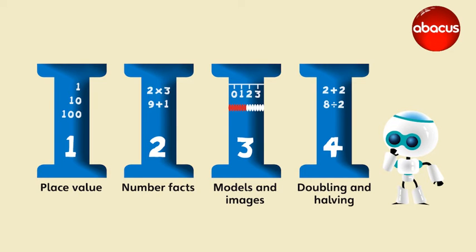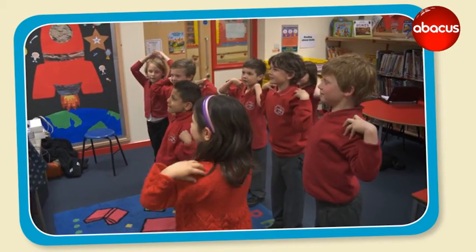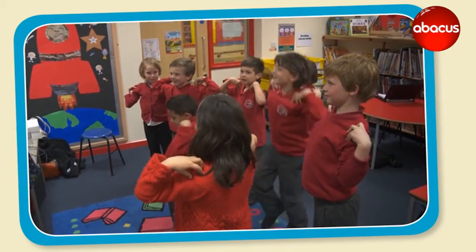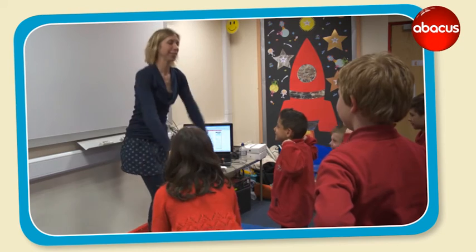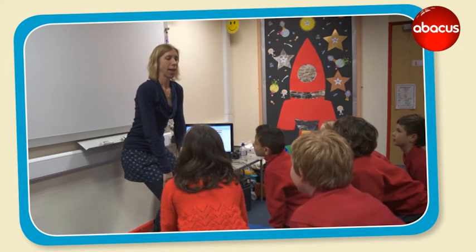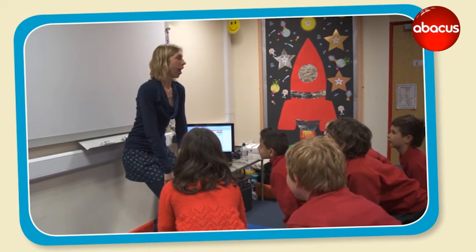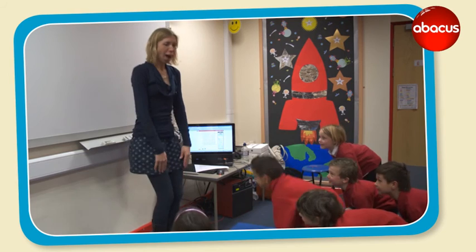The fourth and last pillar relates to doubling and halving. Doubling and halving is the simplest, easiest mathematical function to teach children, and it shows them what a mathematical function is — which is really important. Also, doubling and halving are crucial strategies in mental multiplication and division; they're essential, and so we need to get that rock solid.